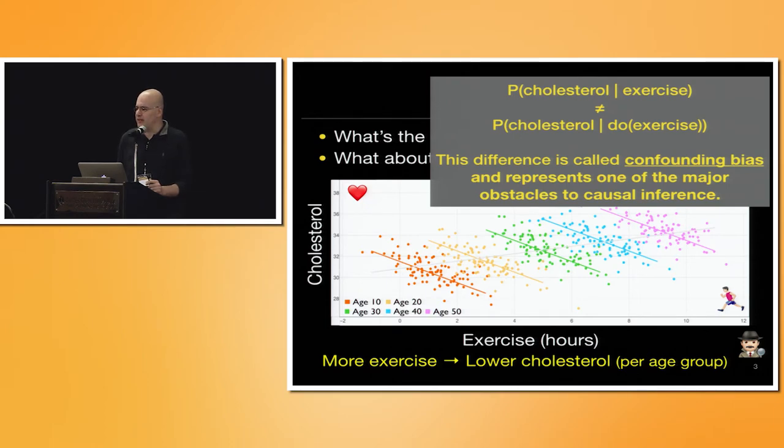In causality, people is not very impressed. They will say that, oh, I know that all these different views are just the association, that is related to the distribution probability of P of cholesterol given exercise, which is different than the causal effect of the P of cholesterol given do exercise. And the difference between these two distributions is called confounding bias.